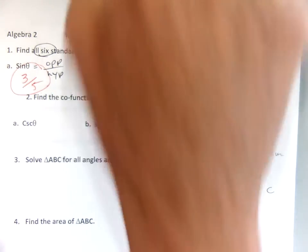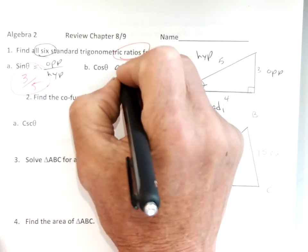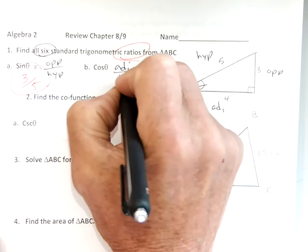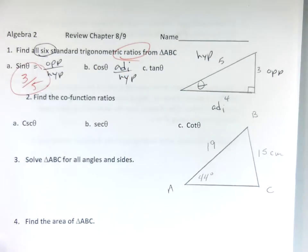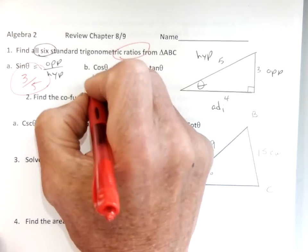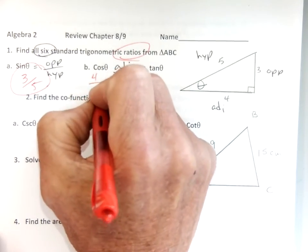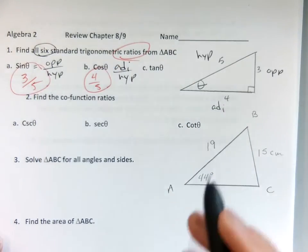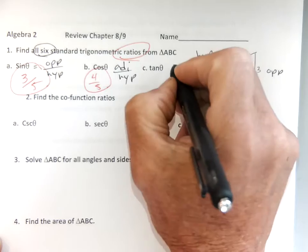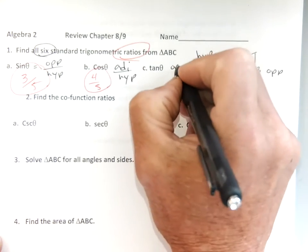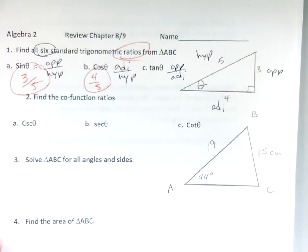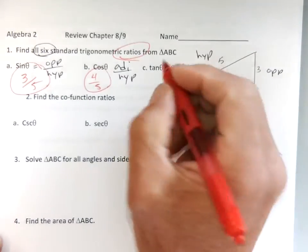Cosine is the adjacent over the hypotenuse, and we know that's going to be 4 over 5. That's all you've got to put. Easy. Tangent is opposite over adjacent, so 3 over 4.